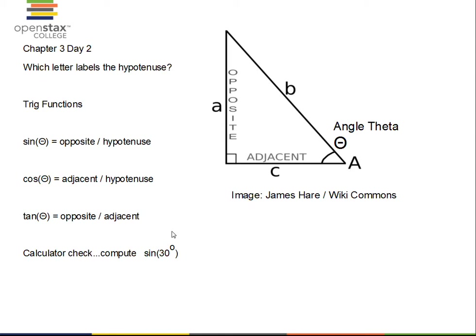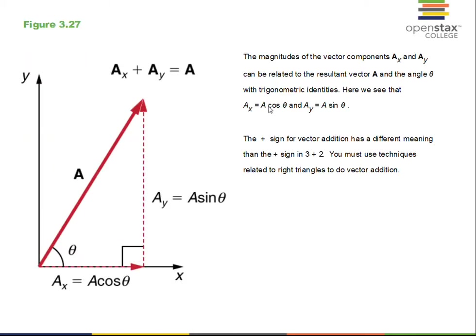Those are our definitions: sine is opposite over hypotenuse. In this diagram, B is assigned to the hypotenuse side of the right triangle. Now let's take the vector Ax plus the vector Ay and see what result we get. You have to recognize that Ax and Ay given here are vectors, and you must do vector addition to find the capital A — that's what we're doing in this video.